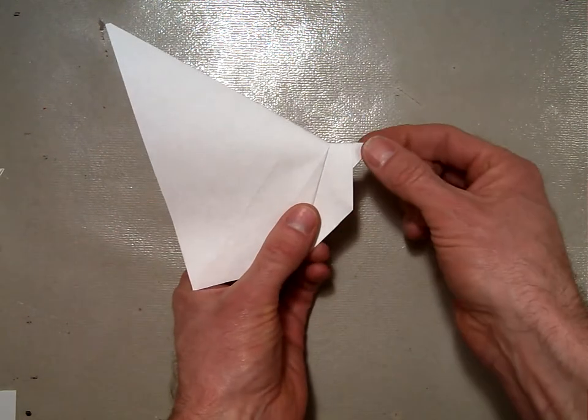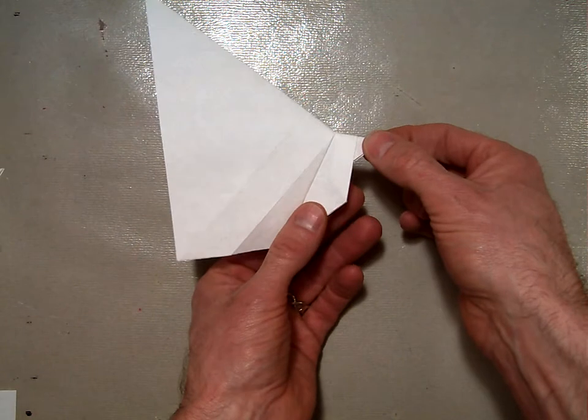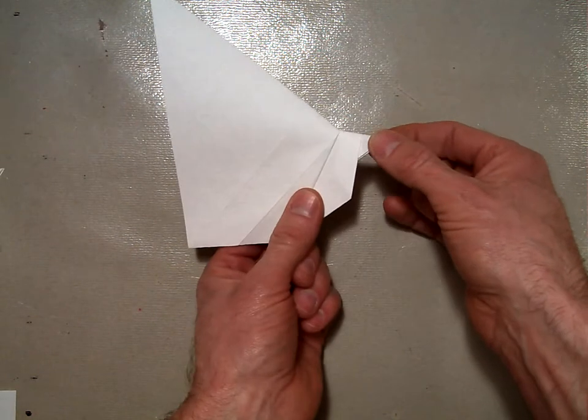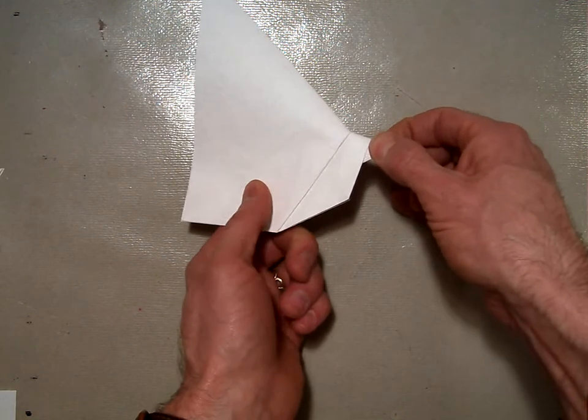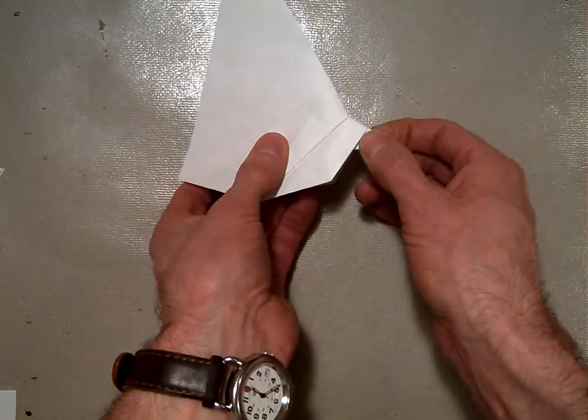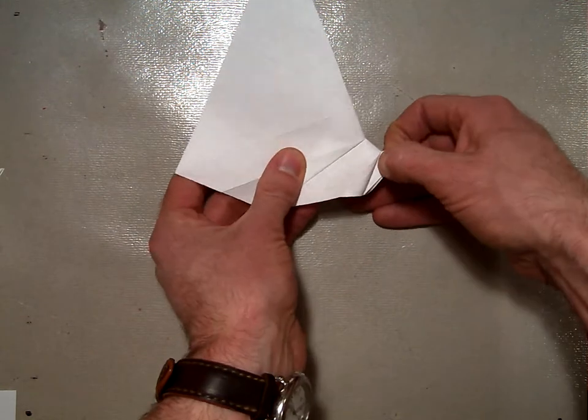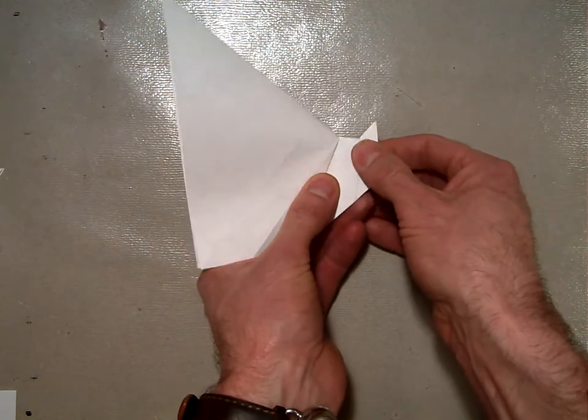I'm going to take the second piece, this little one here, and I'll pinch right here with my left hand and right here with my right hand and pull that same pleat fold - it's on the inside there. Pull that up and re-crease it.